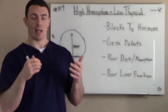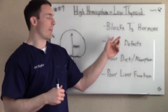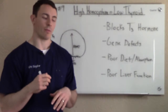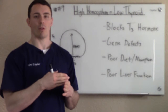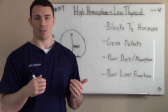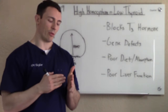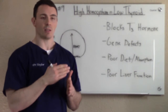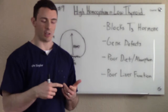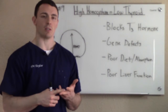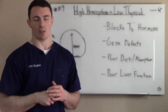If homocysteine gets elevated, what happens is it blocks T3 hormone. So if you don't let T3 hormone into the cell, it's called thyroid resistance. If you can't get T3 hormone into the cell to act on it like it's supposed to — turning on genes, turning off genes — that's where you become thyroid resistant.